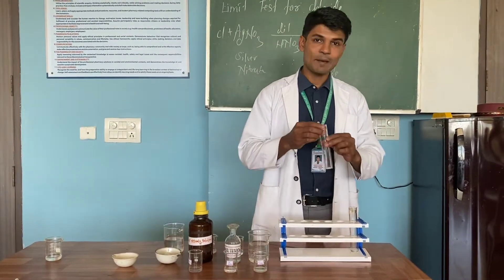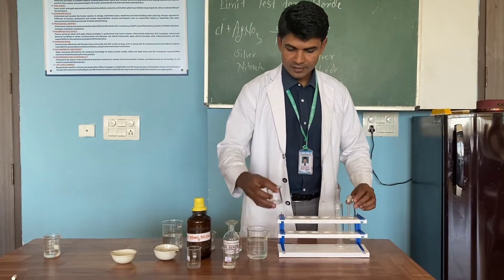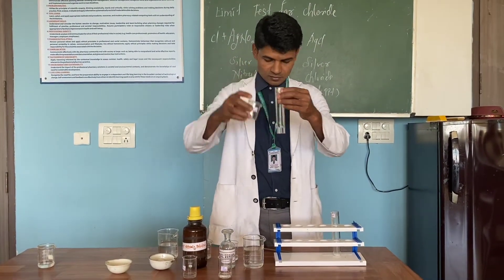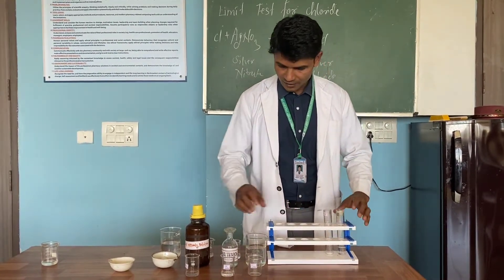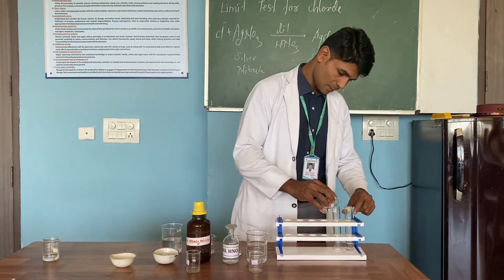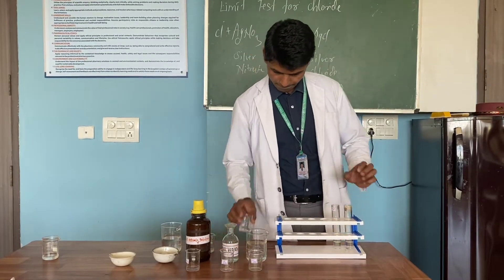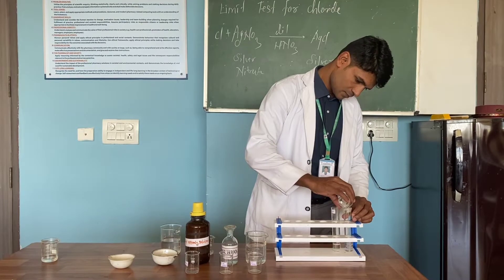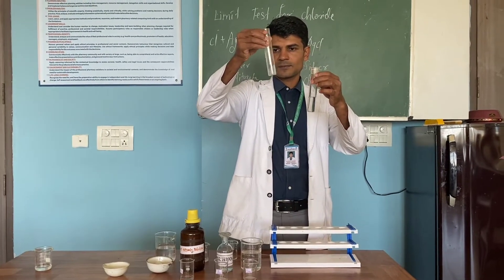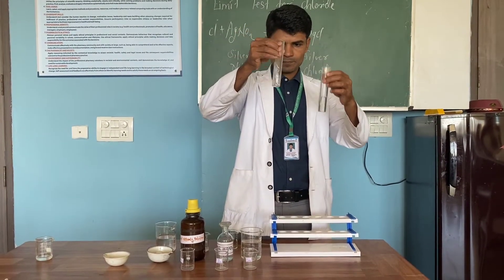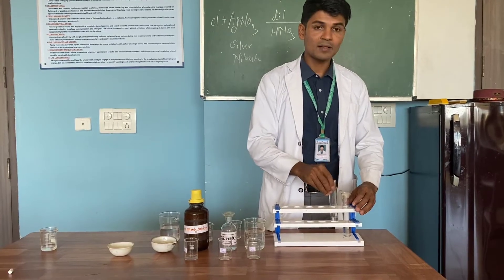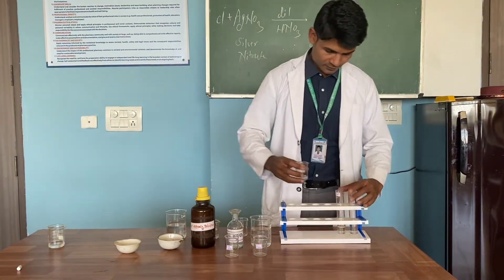I have taken the sample here — a small quantity of sample you have to take. I have measured quantities already. This is the standard solution. After that, take 10 ml of dilute HNO3 in both Nessler cylinders. Shake the solution so that the sample gets dissolved. Then add 2 ml of AgNO3 solution in both the Nessler cylinders.